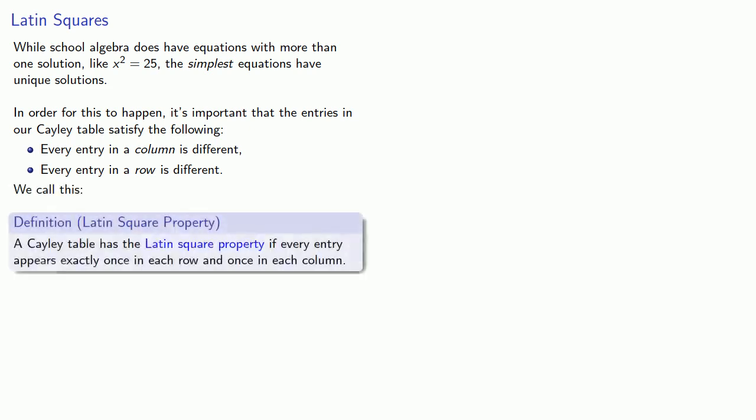And this is important enough that we give it a specific name. This is the Latin square property. And so we say that the Cayley table has the Latin square property if every entry appears exactly once in each row, and once in each column.